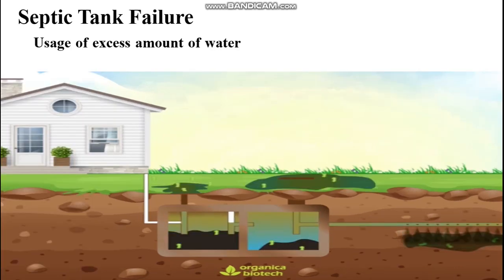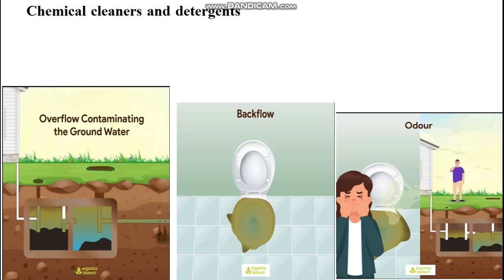Septic tank failure can occur in several ways. First, excessive water usage disrupts the system and removes microbes, resulting in untreated waste. Second, chemical cleaners and detergents reduce the number of microbes, leading to overflow, contamination of groundwater, and backflow of waste and foul gases into homes.